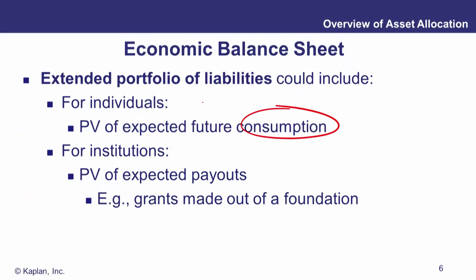For institutions, the source of extended liabilities is a bit different. The present value of expected expenses is still the same principle, but good examples include grants that a foundation is going to make, and future pension payouts — pension payments that are going to come out of a pension fund. So extended assets on the one hand are the present value of future income, and extended liabilities on the other are the present value of future expenditure and outgoings.